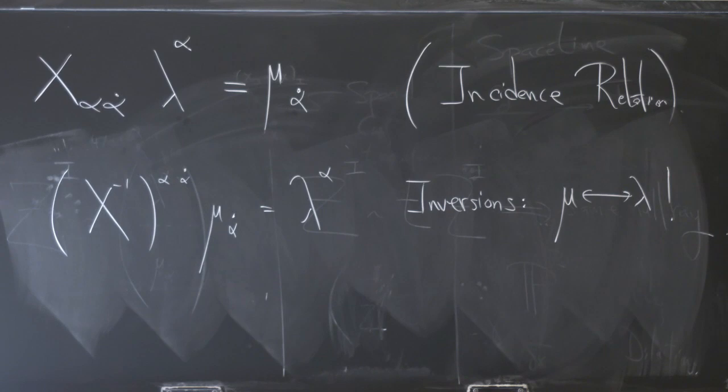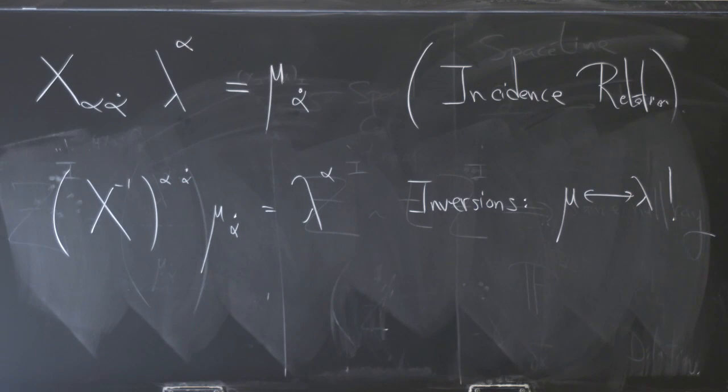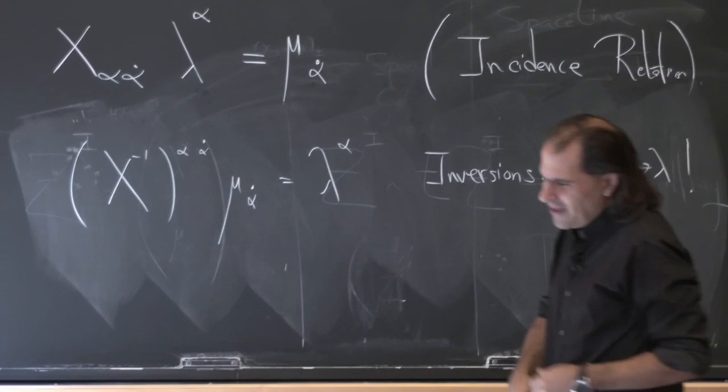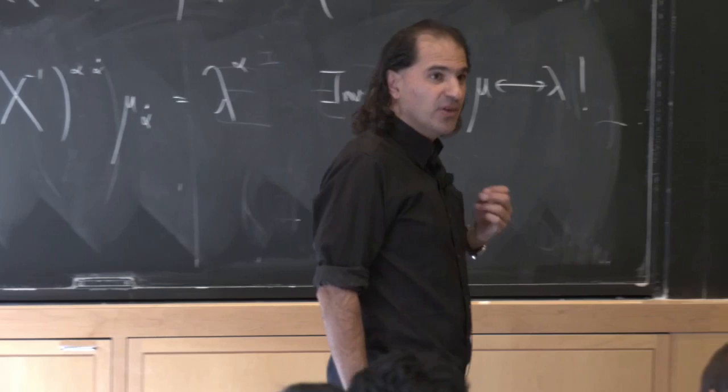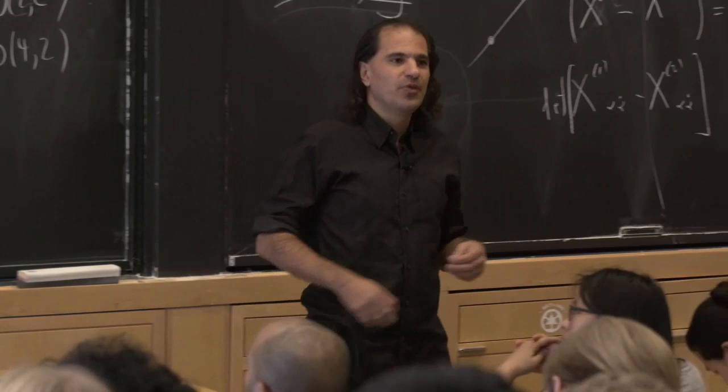I want to stress that again — in the space of x's, which is four-dimensional, I'm imposing two linear equations on it. It's two-dimensional. Our actual picture of a null ray in spacetime is one-dimensional, like a ray, and that's because of our reality condition. It's the analog of the fact that we couldn't see the three-particle amplitude, because having lambda-tilde be the complex conjugate of lambda forced us — if we degenerate the lambdas, we have to degenerate the lambda-tildes as well.